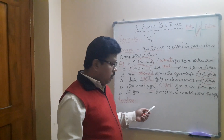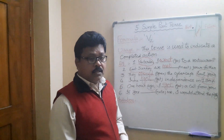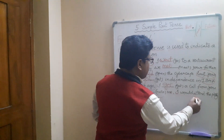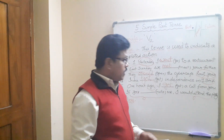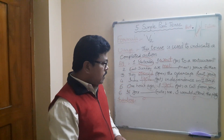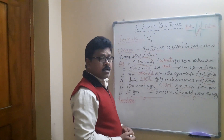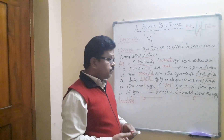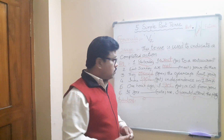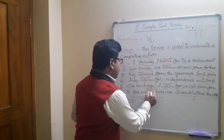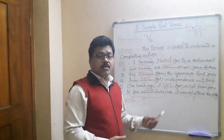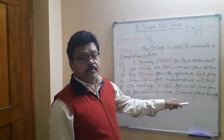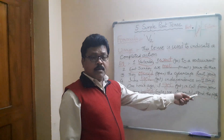Next example: 'If you ___ (invite) me, I would attend the party.' The 'if' part is the subordinate clause; 'I would attend the party' is the main clause. When the main clause has a modal verb — would, should, or could — we use past tense in the if-clause. This is called Type 2 conditional. So the answer is invited. If you invited me, I would attend the party. If you called me, I could attend. If you informed me, I would come.